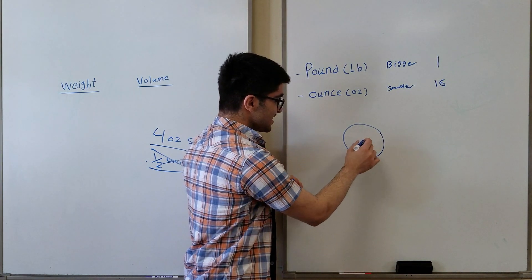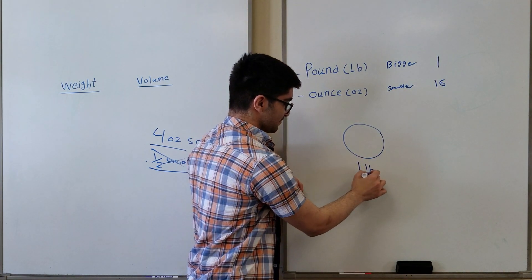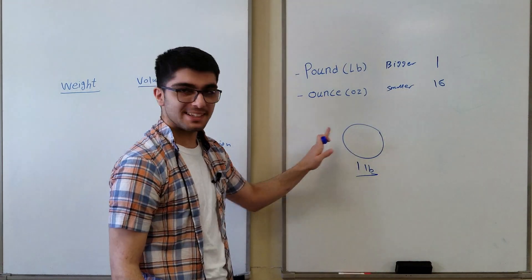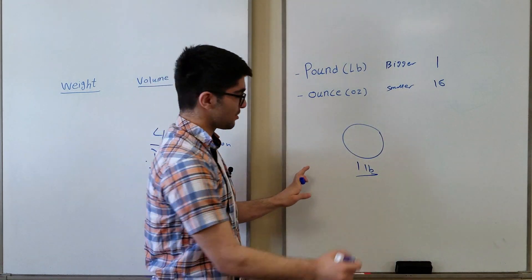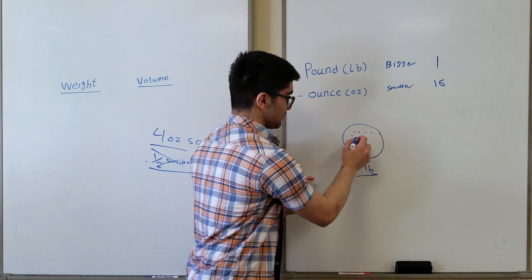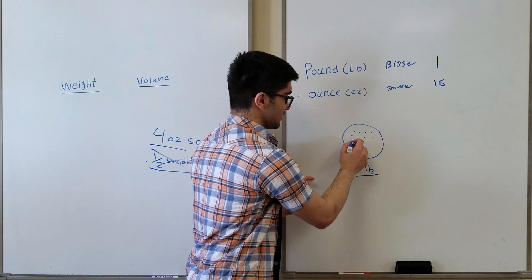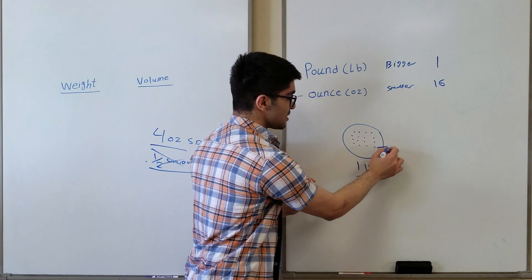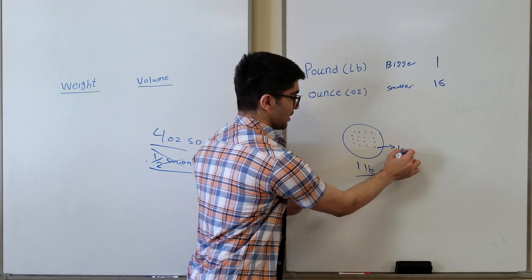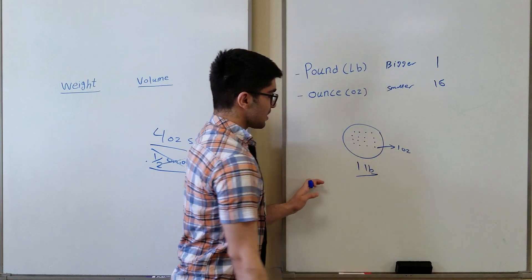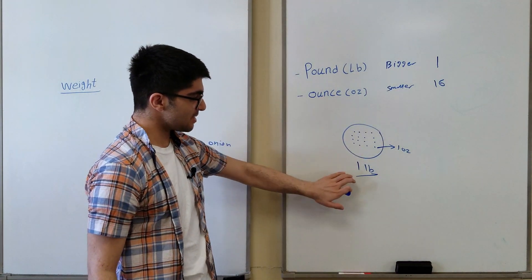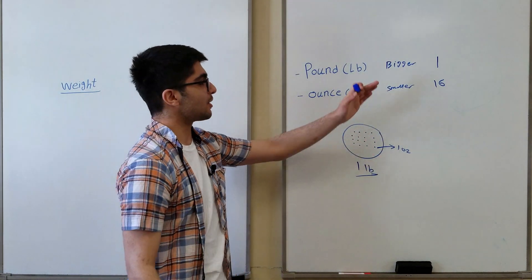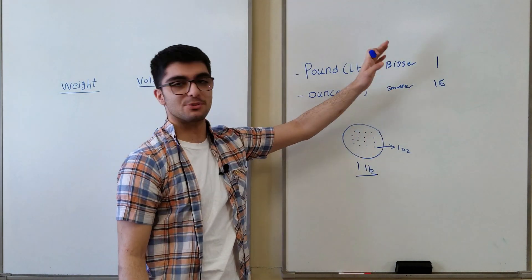Let's say this circle represents one pound. There are 16 ounces in it — each of the 16 divisions is basically one ounce. So there are 16 ounces in a pound. This is something you should remember: there are 16 ounces in a pound.